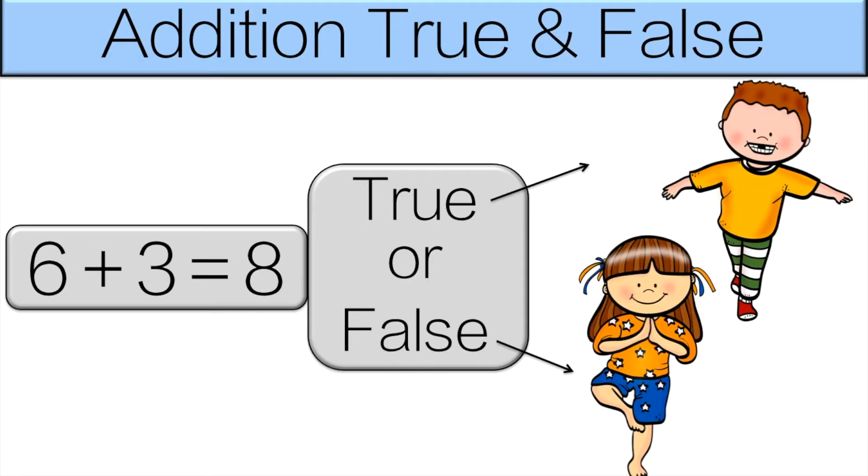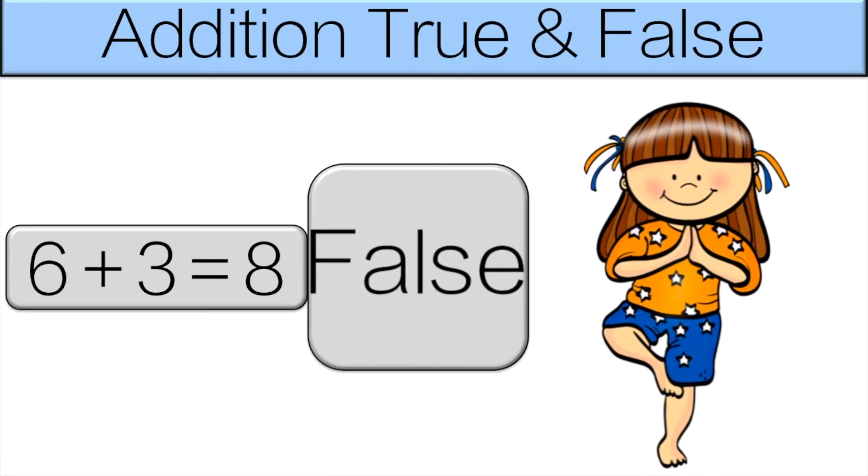6 plus 3 equals 8. Is that true or false? It is false. 6 plus 3 is 9. So do the tree pose for 10 seconds.